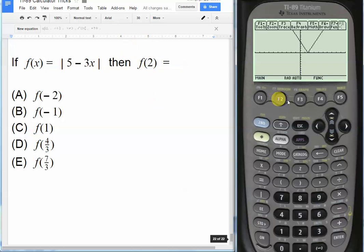Now an easy way to find out f of 2, just hit F3, which is our trace button, and then just push 2. And that will tell us, enter, and that means when x equals 2, y equals 1.